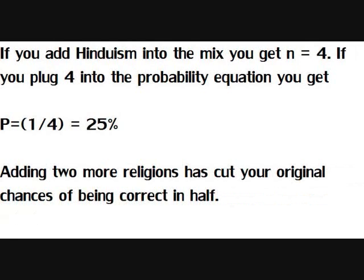If you add Hinduism into the mix, you get n equals 4. If you plug 4 into the probability equation, you get p equals 1 fourth, or 25%. Adding two religions to your original two choices has cut your chances of being correct in half.